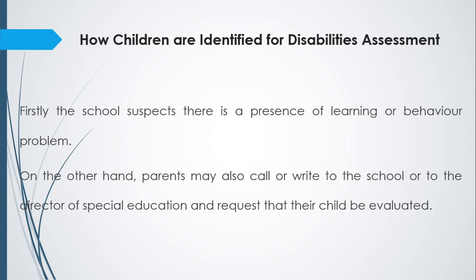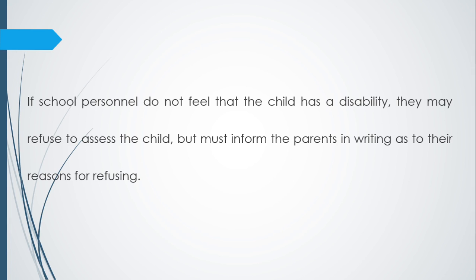Let's talk about how children are identified for disability assessment. First, the school suspects a presence of a learning or behavior problem. On the other hand, parents may also call or write to the school or to the director of special education requesting that the child be evaluated. If school personnel do not feel that the child has a disability, they may refuse to assess the child, but they must inform the parents in writing with their reasoning for refusing.